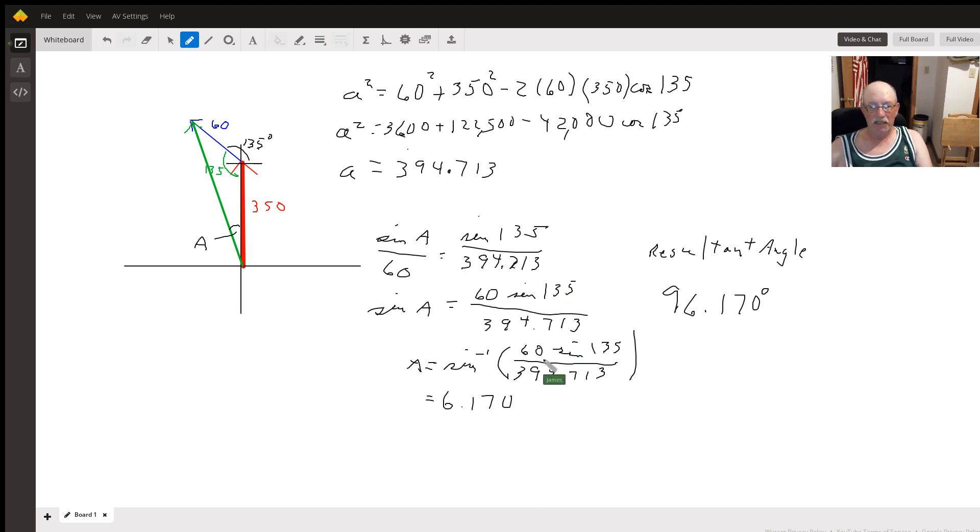Multiply both sides by 60, take the inverse sine, and we get an angle of 6.170.